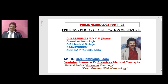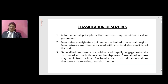We are continuing with a series of lectures of Prime Neurology. There are about 50 episodes of Prime Neurology, and if one listens to all these 50 episodes, one would have acquired a good knowledge of neurology. Right now we are on Prime Neurology Part 22: Epilepsy Part 2, Classification of Seizures.